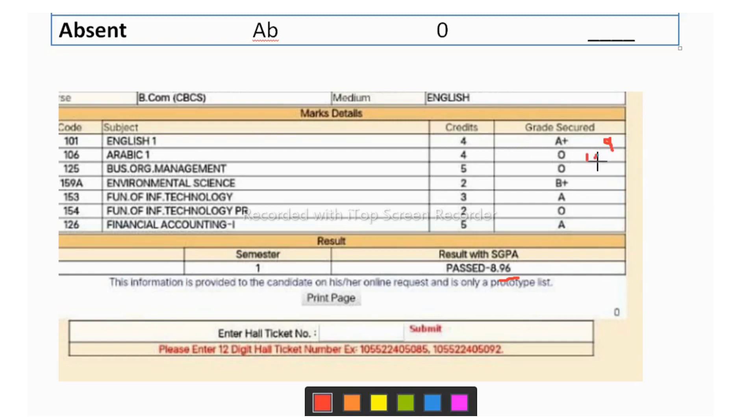This is 10. This is also 10. So students you can see here A plus 9, O 10, O 10, B plus 7, A 8, O again 10 and A again 8. So how you have to calculate your credit points. This is the grade score and this is the credit. Now you have to calculate credit point. Then only you can calculate your SGPA.